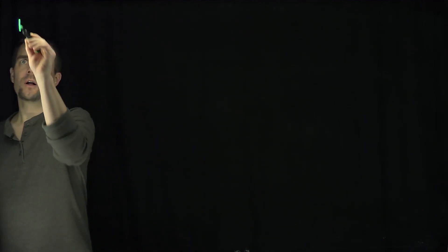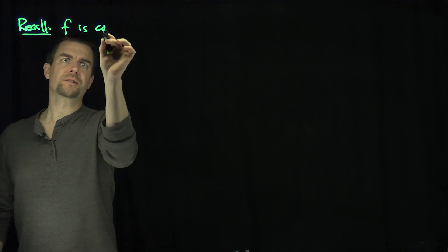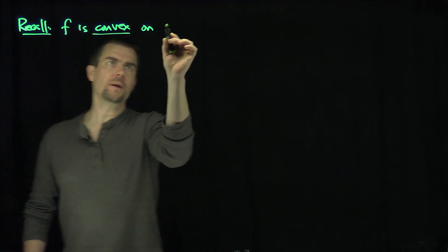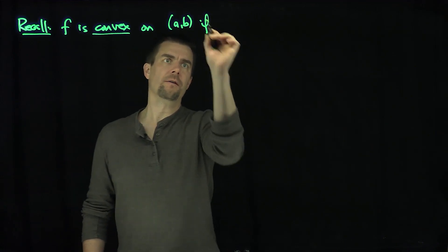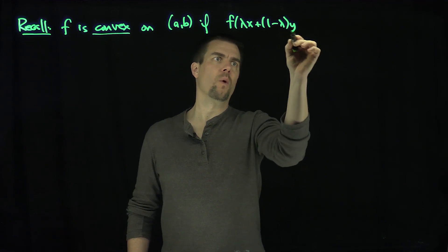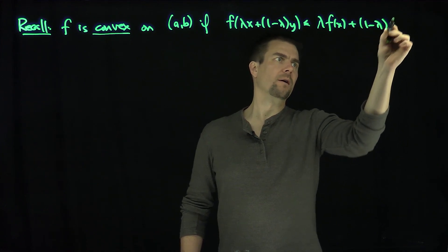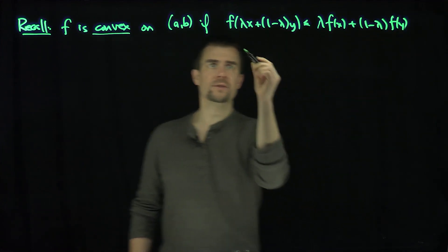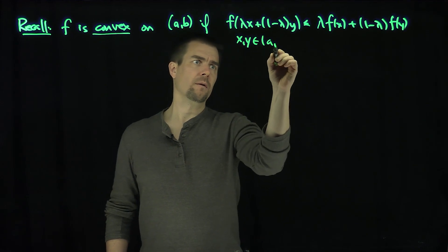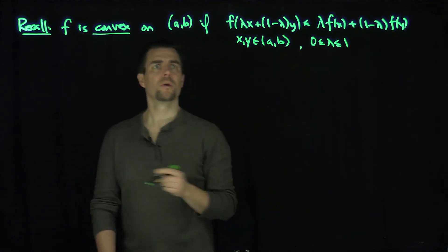Hello, students. In this video, we'll prove that convex functions on an open interval are automatically continuous. Let's recall that f is convex on (a,b) if f(λx + (1−λ)y) ≤ λf(x) + (1−λ)f(y) for all x and y in (a,b) and all λ between 0 and 1. That's the definition of convex.